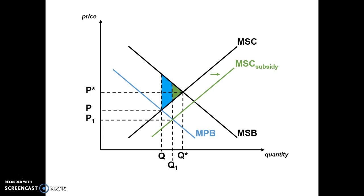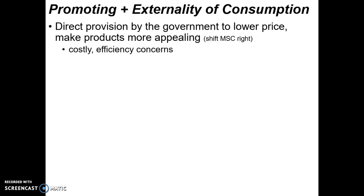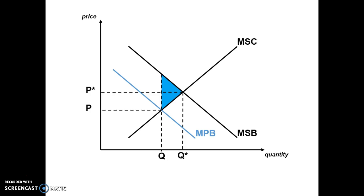Another solution is for the government to directly provide the merit good, which also lowers the price and makes the product more appealing — similar to a subsidy. However, direct provision raises efficiency concerns: can the government produce the product efficiently? I diagram it the same way as a subsidy: shift MSC to the right to show more supply, and quantity moves closer to Q star. The wedge also gets smaller, showing that some of the original potential welfare gain became actual welfare gain.